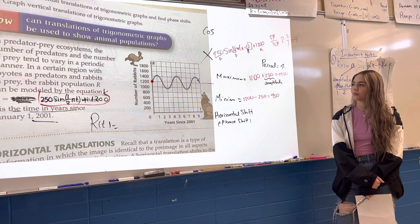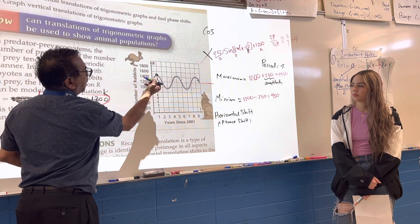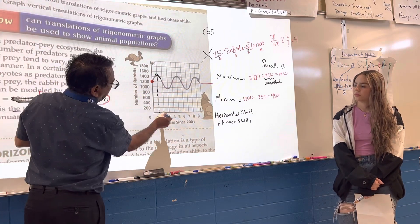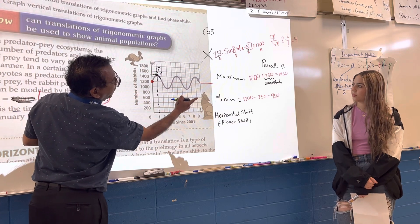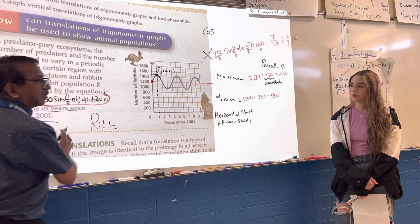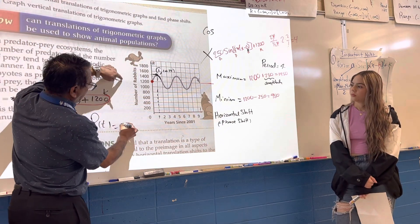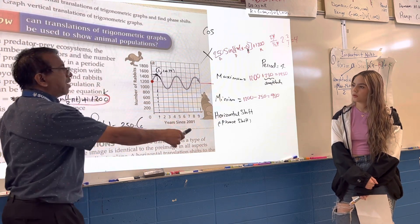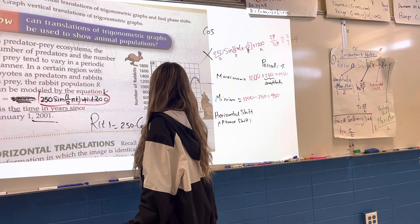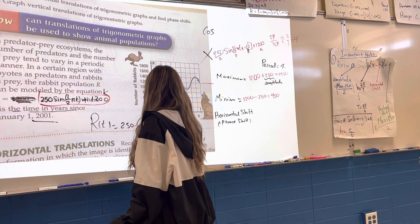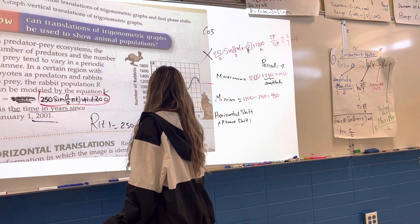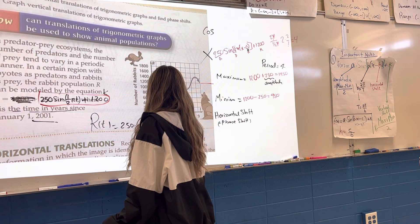If you start at point one and put a point at the top, that's where cosine starts — from the top. So the maximum occurs at x equals one, and again at x equals four. Everything stays the same — amplitude is still 250 — it's just that the graph shifts. When the graph shifts, you write it as: 250 cosine of half-pi times the quantity x minus one, plus 1200. The shift is minus one because you're going to the right.